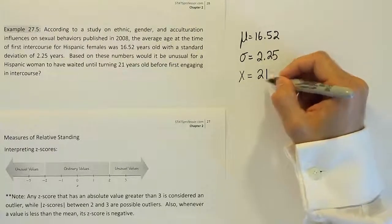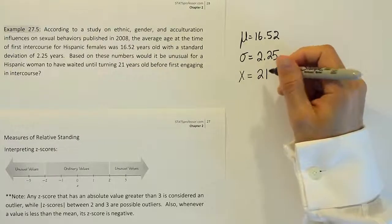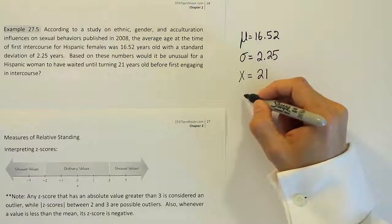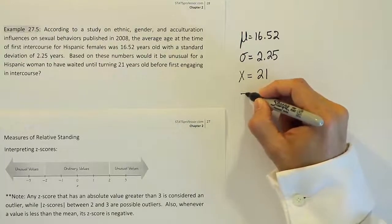So we're going to try to convert 21 into a z-score and say, would that be an unusual value? Would this be an unusually long time to wait? So let's put the z-score formula up.